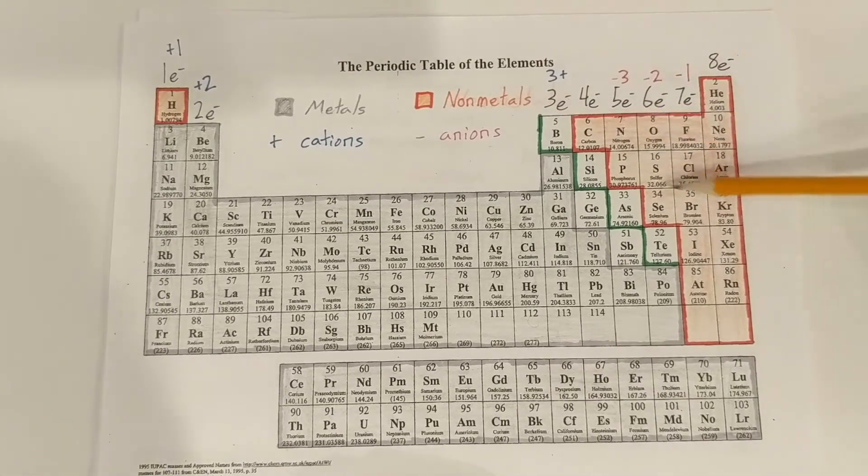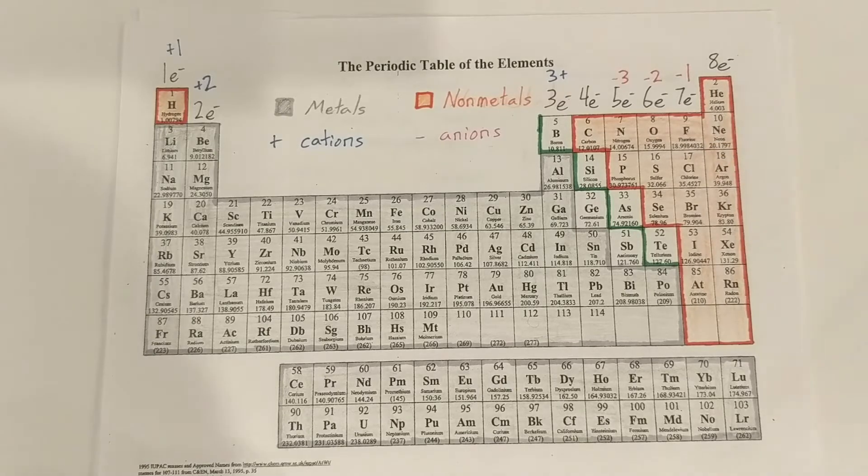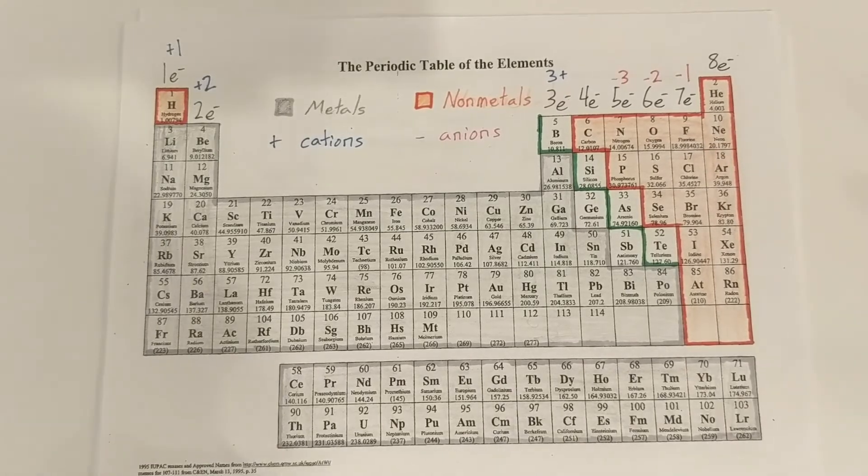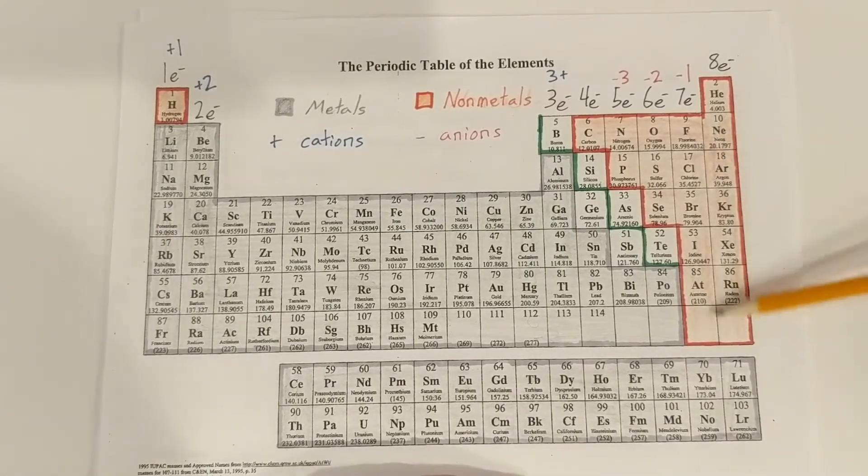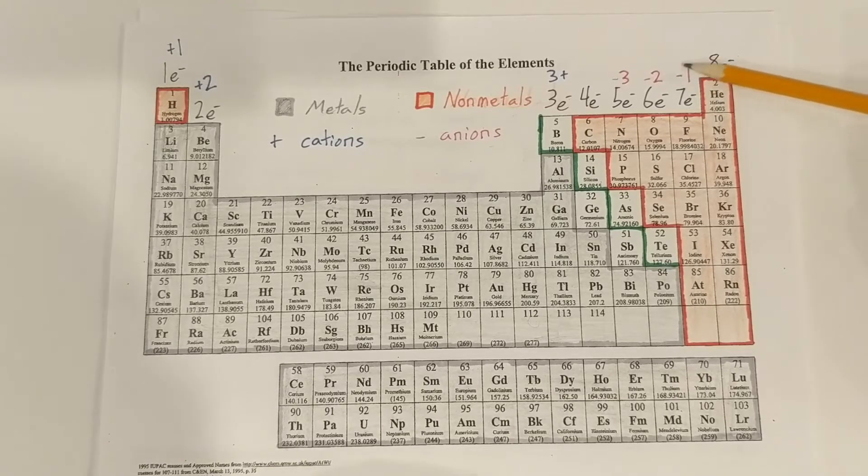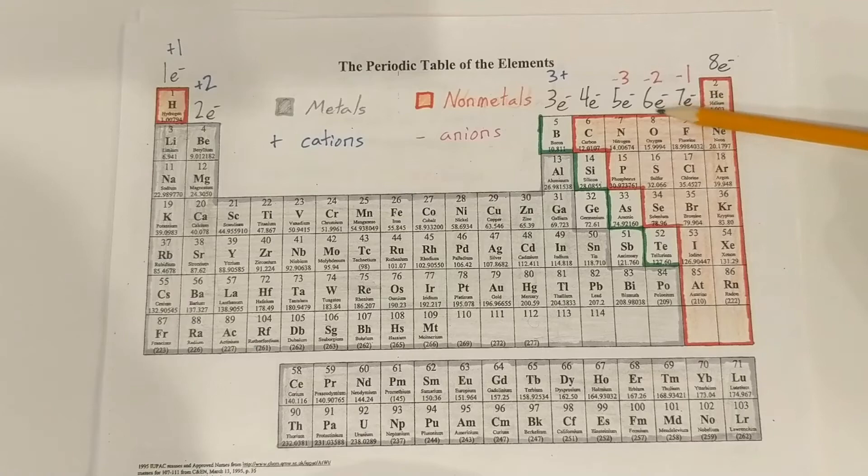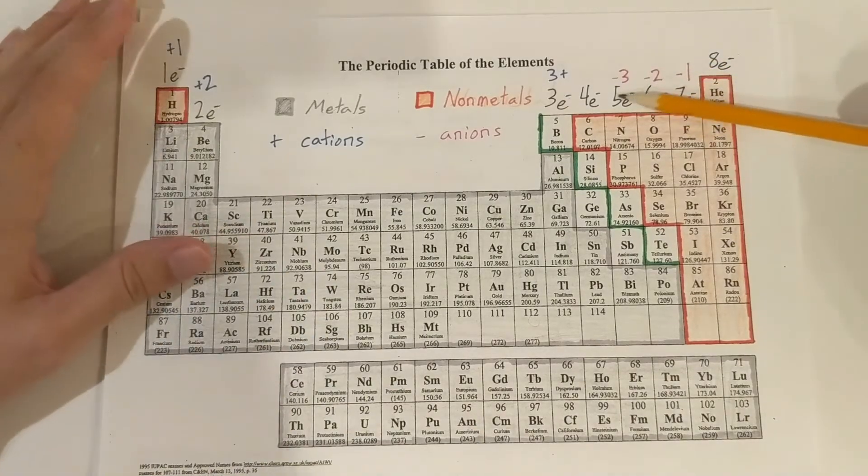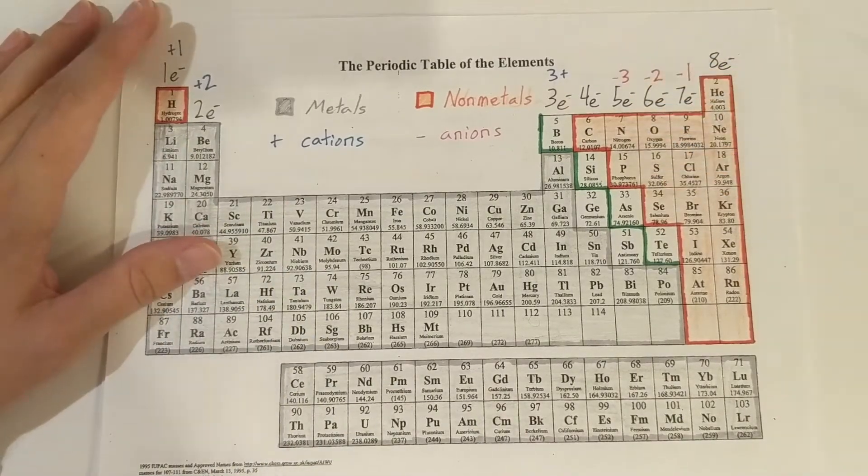And our non-metals, they want to gain more valence electrons to hit a full shell, a full valence shell. So if it has seven valence electrons, it'll want to have eight. So it'll gain one, it'll be a minus one. Six valence electrons will be minus two charge. Five valence electrons will be a minus three charge.